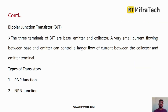A transistor is a bipolar junction transistor, the symbol shown is the BJT — that is, the Bipolar Junction Transistor. It has two polarities and two junctions. It has mainly three terminals: base, emitter, and collector.